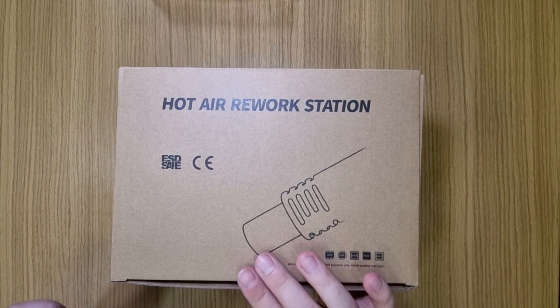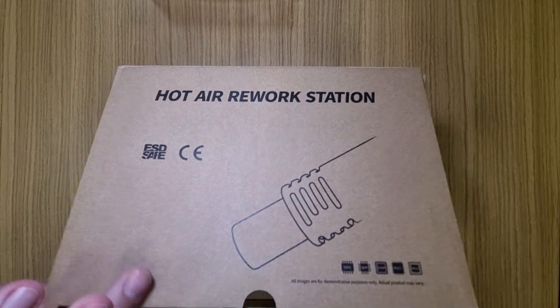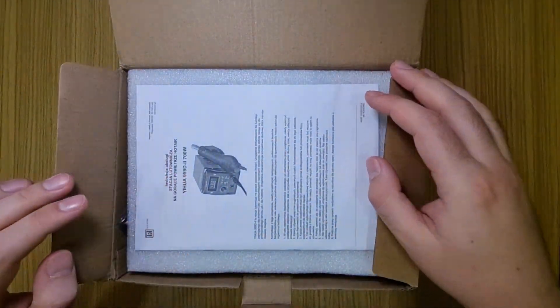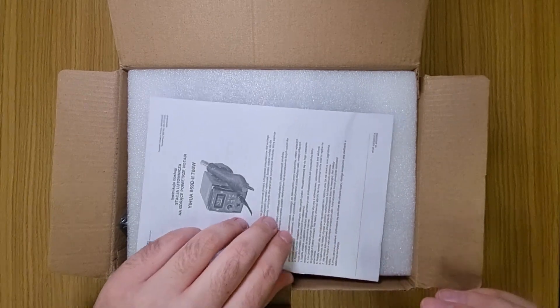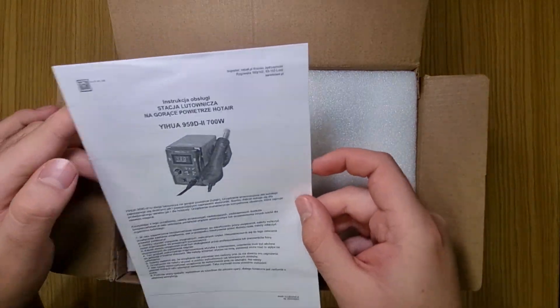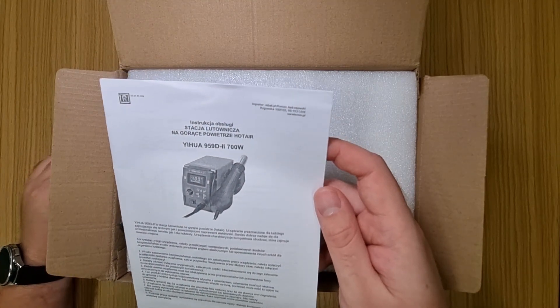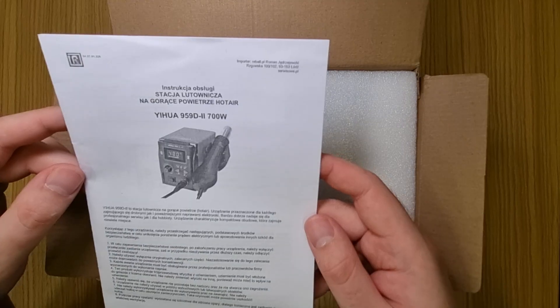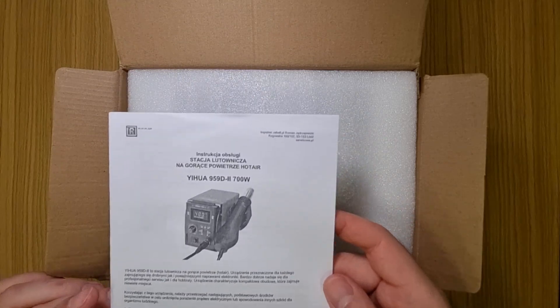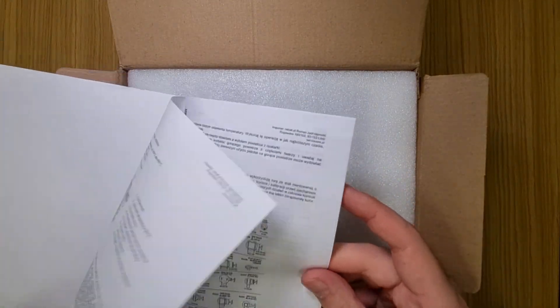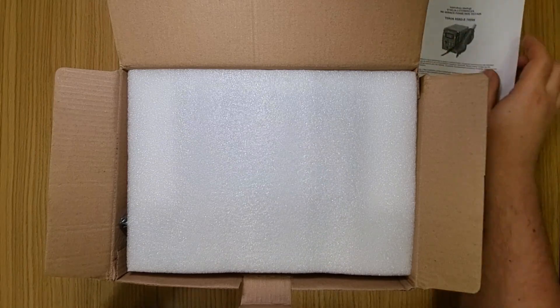Let's start with the unboxing. In this box at the beginning we see the instructions and the exact model which I've got - it's Yihua 959D second version, and it's in Polish, whatever, who reads the instructions.